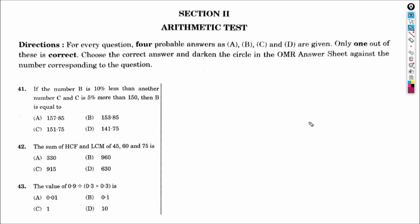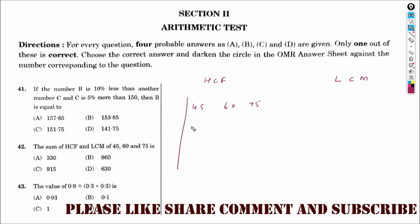Let us see the second question. We need to find the sum of HCF and LCM of 45, 60, and 75. We have to factorise these numbers.